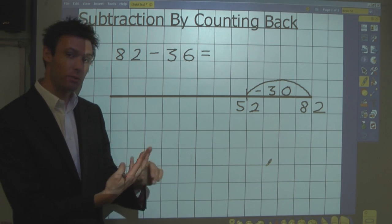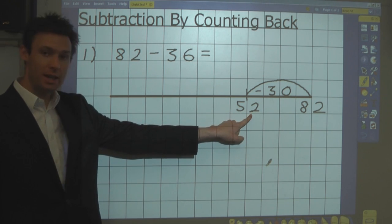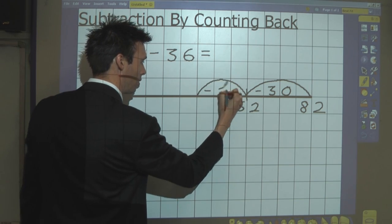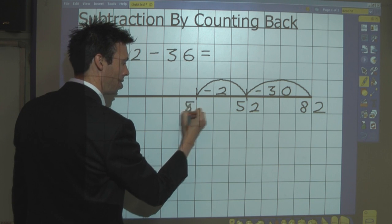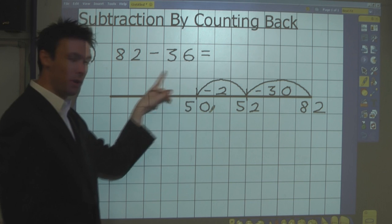But rather than count backwards on my fingers, I can do this much more quickly in my head in two stages. I can start by taking away 2, which will give me 50, and then I take away 4.